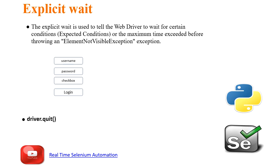You might be wondering: if everything works fine with implicit wait, why are we moving to explicit wait? Let's see an example. The case you are dealing with has 10 web elements. Out of 10, nine web elements load within 2 seconds, and one web element takes more than 5 seconds. If you use implicit wait, you must set the time to more than 6 seconds — meaning even the fast elements will wait the full 6 seconds. That is the reason we use explicit wait.